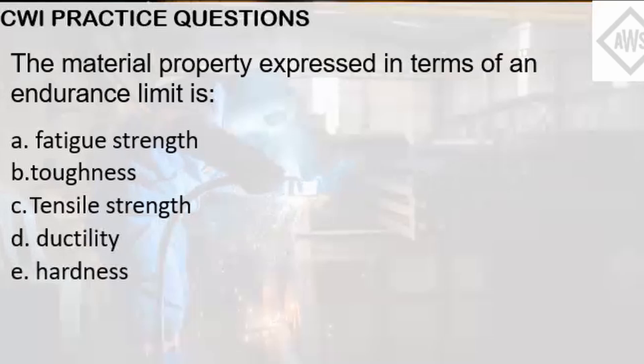The property expressed in terms of endurance limit is fatigue strength. For mechanical engineers, if you can remember the Goodman and Soderbergh equation, the endurance limit of the material is synonymous with the fatigue strength. Looking at the other choices: toughness is the resistance of a material against impact; tensile strength is the capacity of the material against a given load; ductility is the property of the material to yield against a load without breaking; and hardness is the resistance of a material against indentation. Hence, the answer here is Letter A, Fatigue Strength.